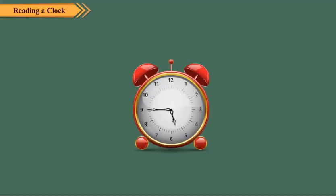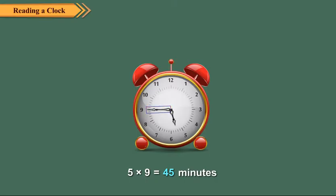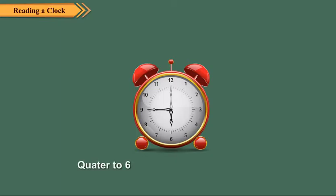Observe this clock. The hour hand is between 5 and 6. The minute hand is at 9, that is in the second half hour. So, 5 × 9 equals 45 minutes have passed. It means the minute hand has yet to travel 15 minutes, or one quarter, to reach the next hour of 6. So, the time is quarter to 6, or 5:45.